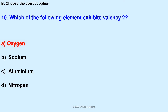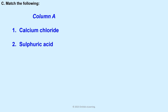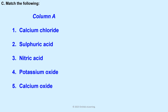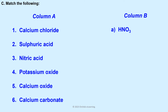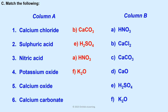Match the following — look at the options in column A and column B. Answers: CaCO3 matches with (b), H2SO4 matches with (e), HNO3 matches with (a), K2O matches with (f), CO matches with (d), and CaCO3 matches with (c).